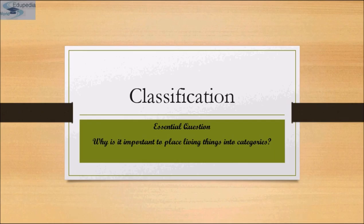Nomenclature or naming is only possible when an organism is described correctly and we know to what organism the name is attached to. That is known as identification.